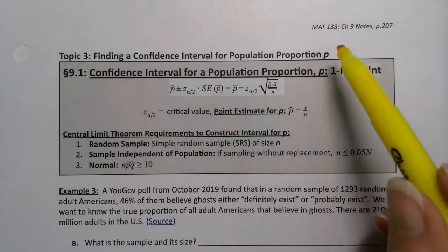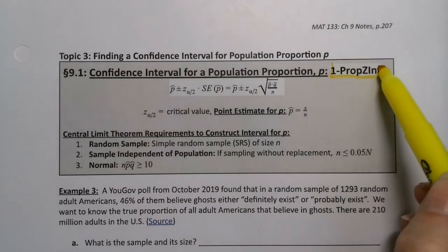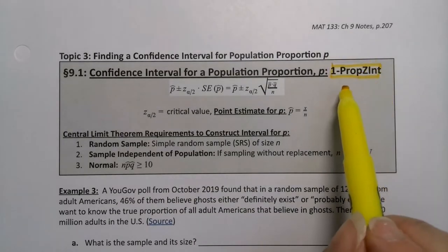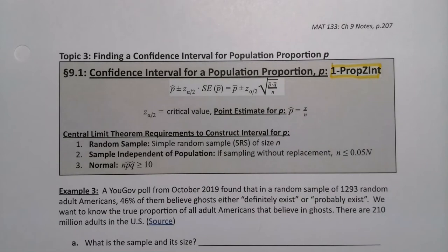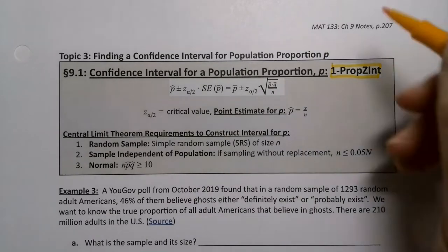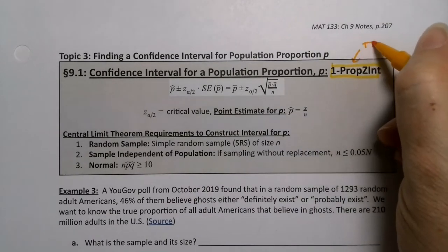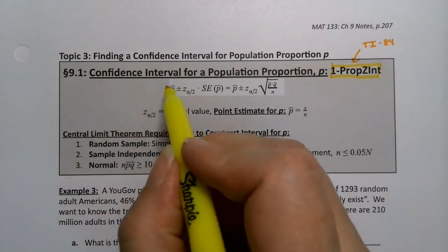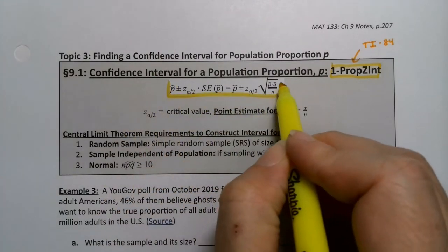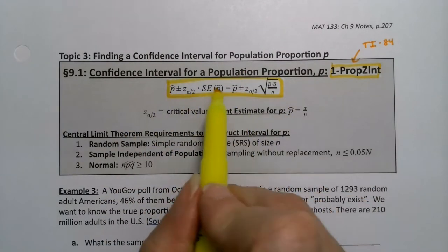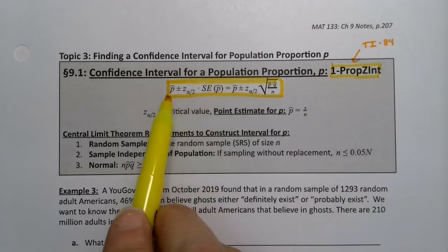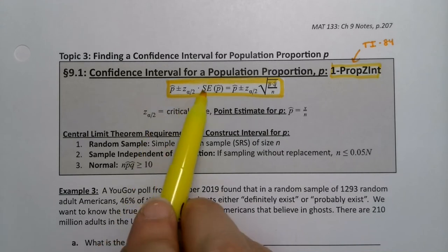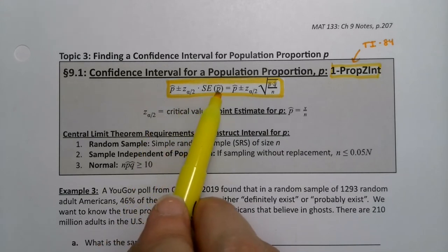We have this box here that has all sorts of important formulas and information about making a confidence interval for a population proportion. This little piece right here is for a TI-84 calculator. If you're not on a TI-84 calculator, don't worry about it. The formulas are right here. It's the same formula just written two ways because it's the P hat, which is your point estimate, plus or minus your critical value times your standard error of your P hat.